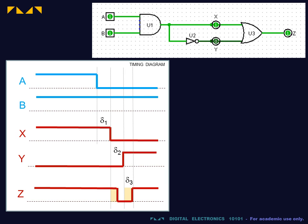We also need to account for the delay delta 3 in the OR gate. The circuit propagation delay is thus the sum of those for the three gates.